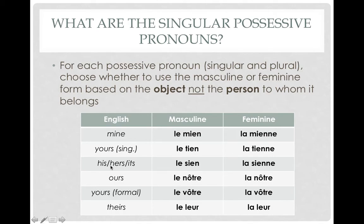For 'ours,' masculine is le nôtre, feminine is la nôtre. For 'yours' (formal), masculine is le vôtre, feminine is la vôtre. And lastly, for 'theirs,' masculine is le leur, and feminine is la leur.